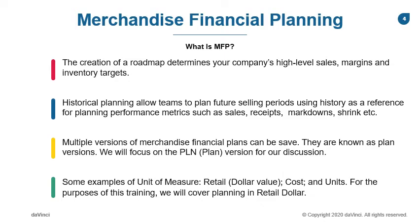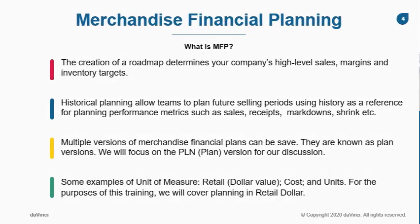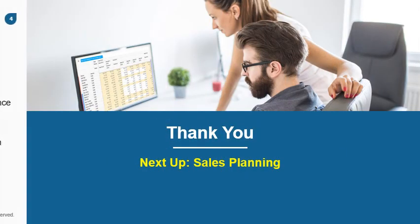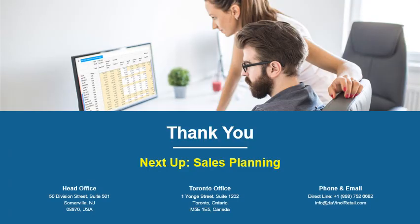For each of these plans, there is a planning metric such as sales, receipts, markdowns, and shrink. The planning metrics can be planned in what's called a unit of measure. A unit of measure can be dollars, units, or cost. For the purpose of this discussion, we will use retail dollars.